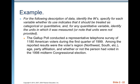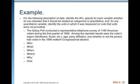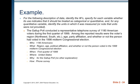The Gallup poll conducted a representative telephone survey of 1,180 American voters during the first quarter of 1999. Among the recorded results were each voter's region (northwest, south, etc.), age, party affiliation, and whether or not the person had voted in the 1998 midterm congressional election. So let's identify our W's and H. The who are the 1,180 Americans who were surveyed — not who conducted the study, but the cases. The what are the variables: region, age, political affiliation, and whether or not the person voted in the 1998 midterm congressional election.